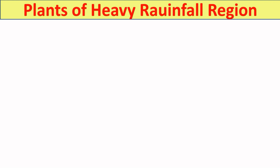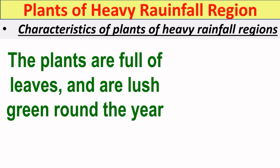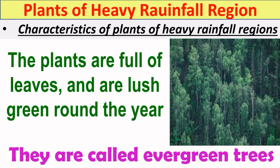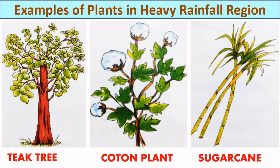The last type is plants of heavy rainfall areas. These plants are full of leaves and are lush green around the year, and because of this they are called evergreen trees. Examples of plants in heavy rainfall areas are rubber, teak, cashew nut, and pepper trees. Some smaller plants grown in heavy rainfall areas are cotton plant and sugar cane.